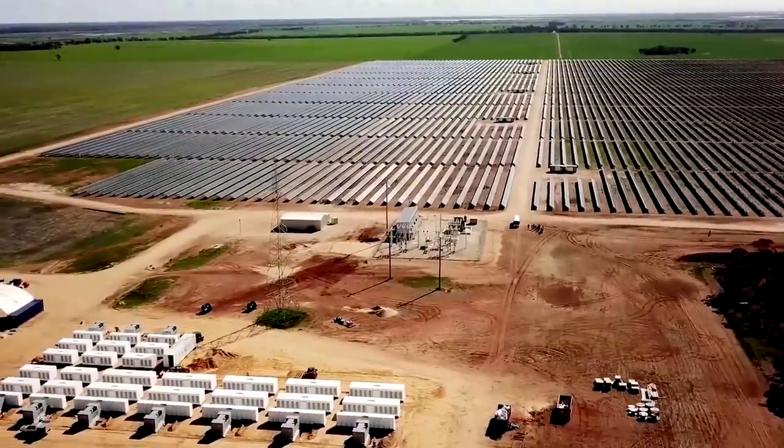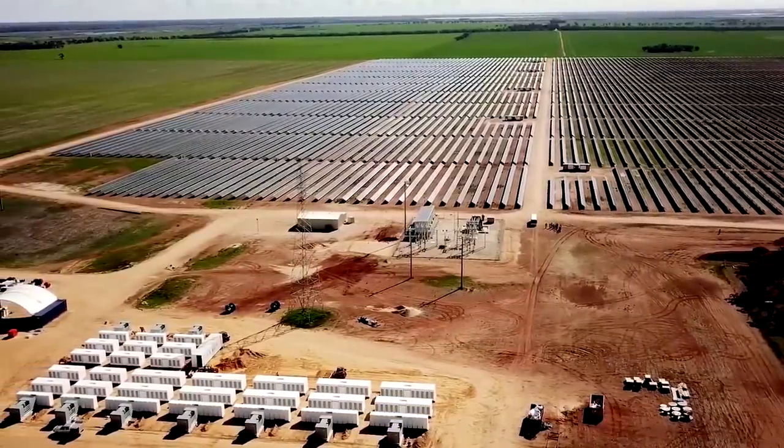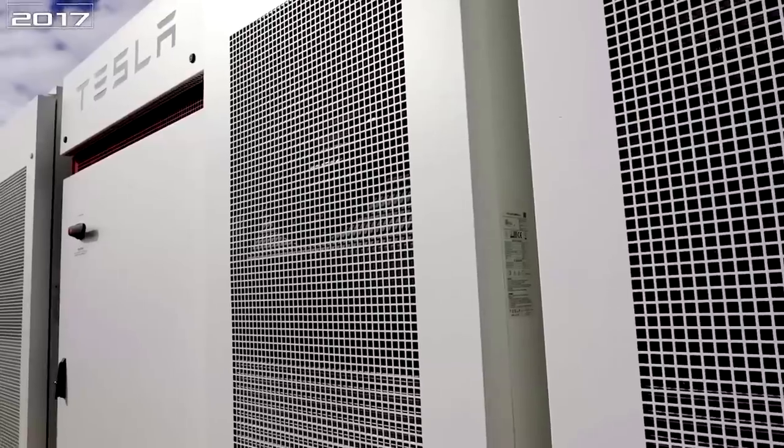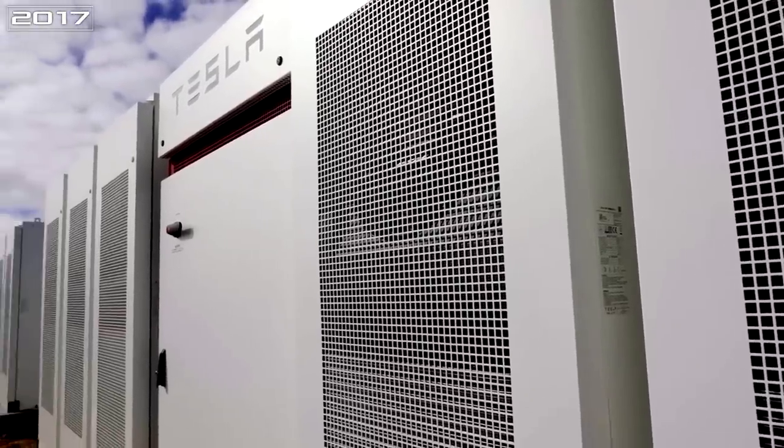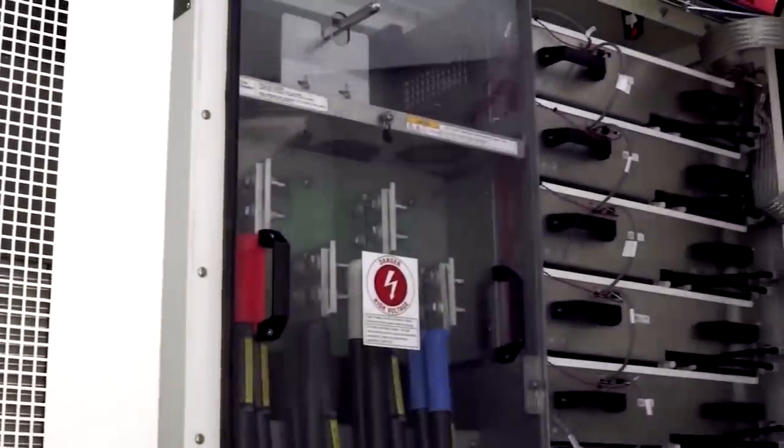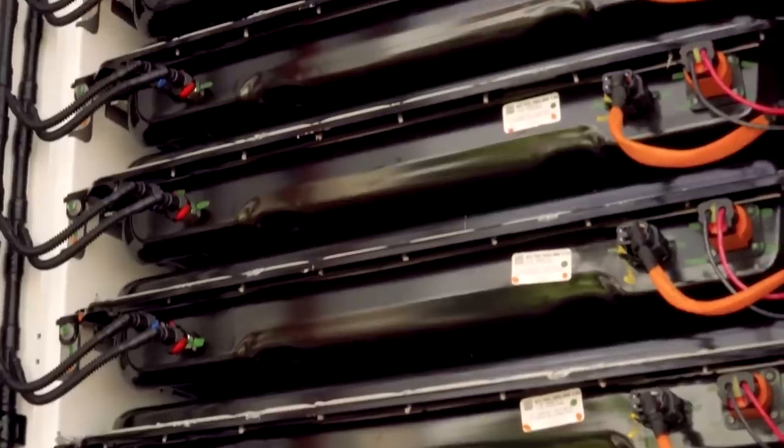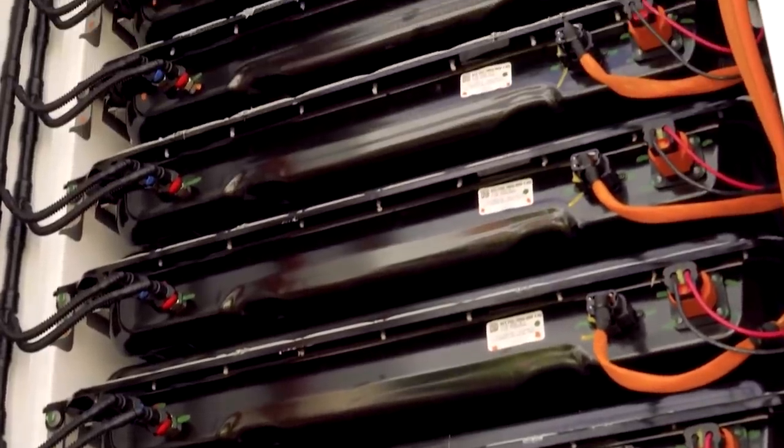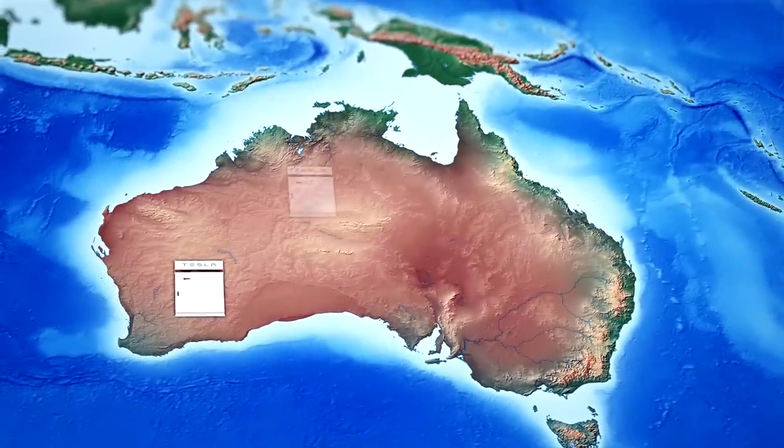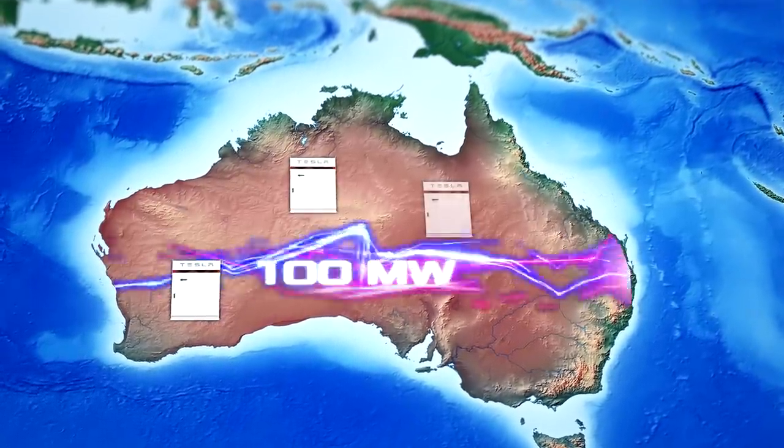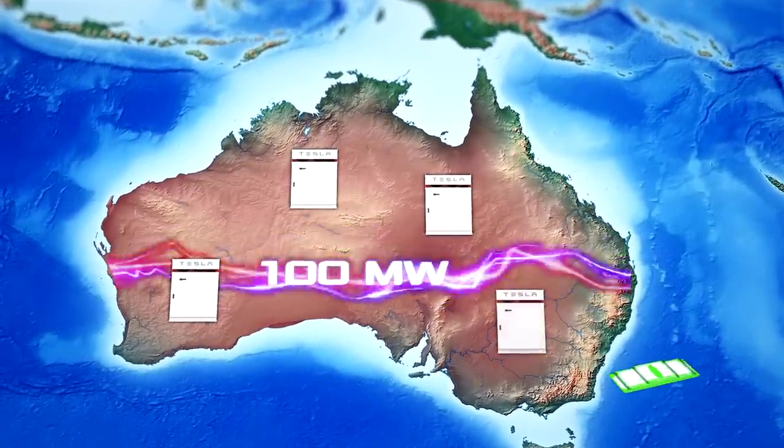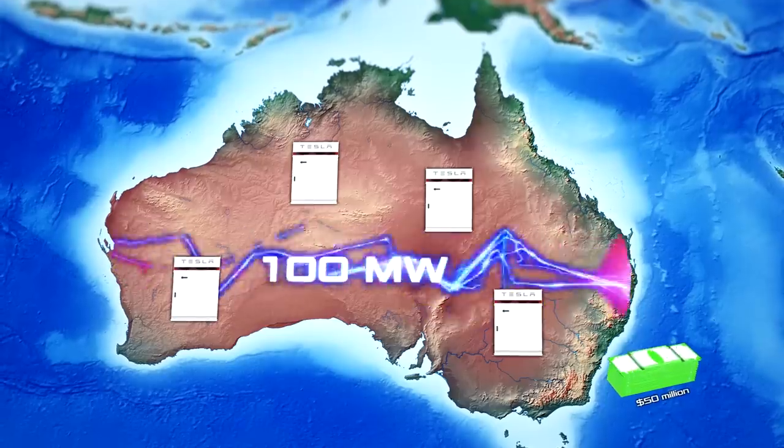Definitely, it would be possible to build huge lithium-ion batteries as Elon Musk's company did for the Australian government in 2017. But such projects have many disadvantages. First of all, the cost of the battery. For instance, an industrial battery in Australia with an installed capacity of 100 megawatt costs the government about $50 million.